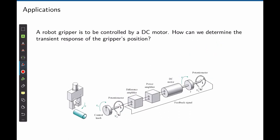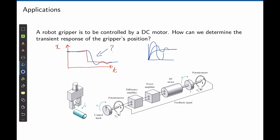Consider now a robot gripper controlled using a DC motor. How can you determine the transient response of the gripper's position? The gripper is operating at a constant position and then given a command to go to a different position. The actual position will follow a transient before reaching the new desired position. Is this transient an exponential waveform, an exponential and sinusoid combination, or is the system even unstable?